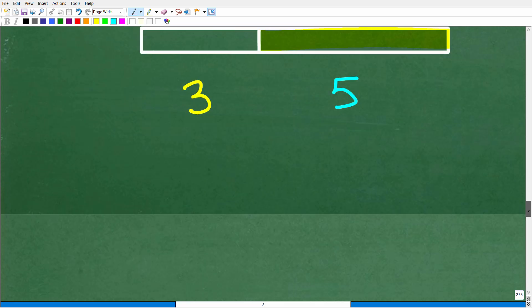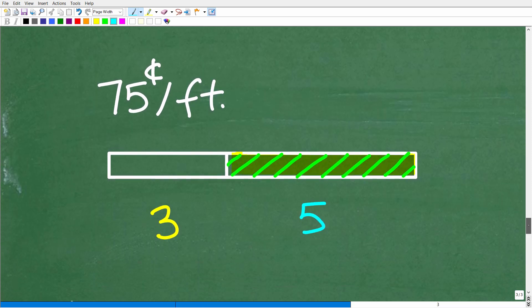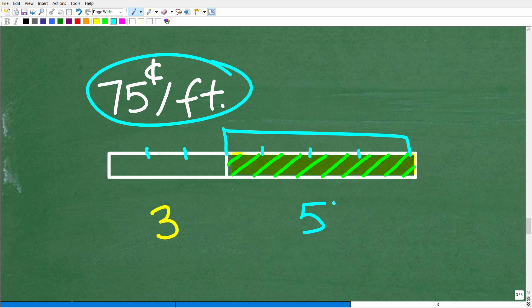All right, so this is pretty simple, because recall from the problem that each foot costs us $0.75. So this 8-foot board costs $0.75 per foot. So in other words, for every foot of this board, you have to pay $0.75. So this 5-foot section right here, the total cost is going to be 5 times $0.75.